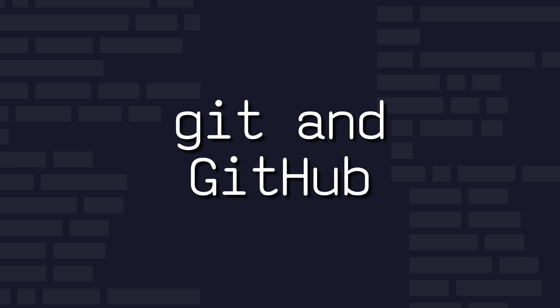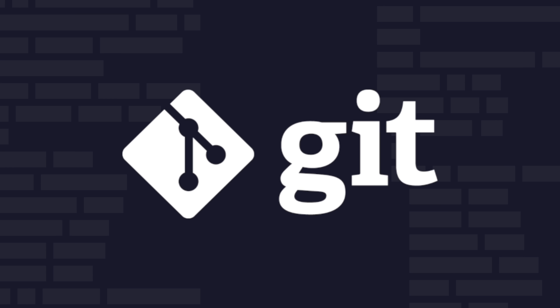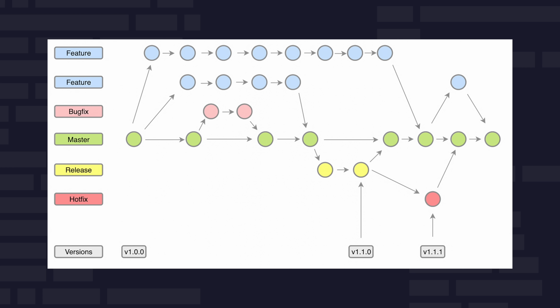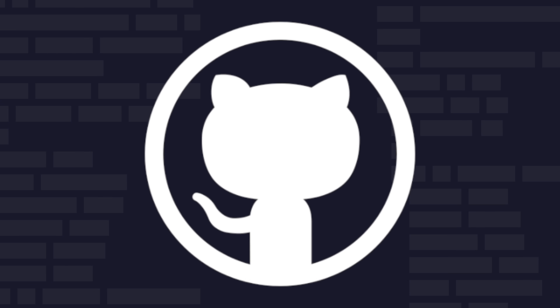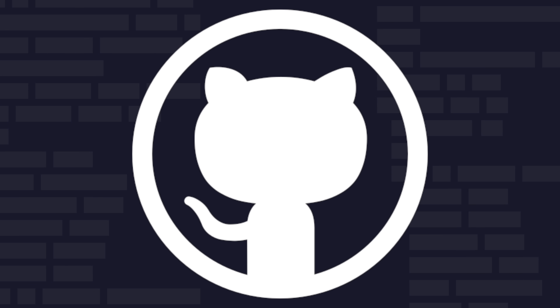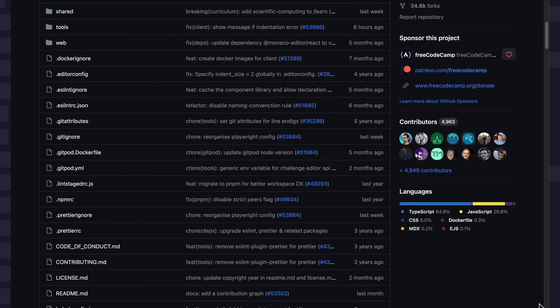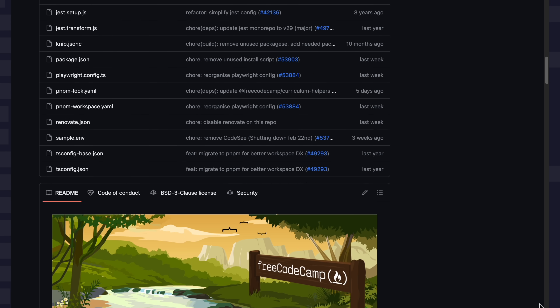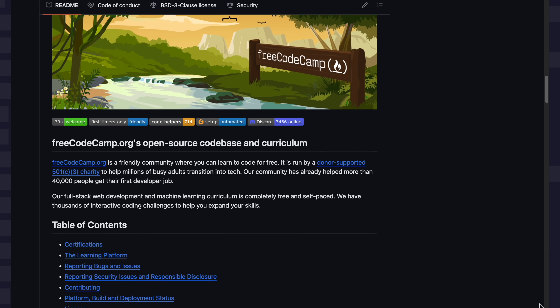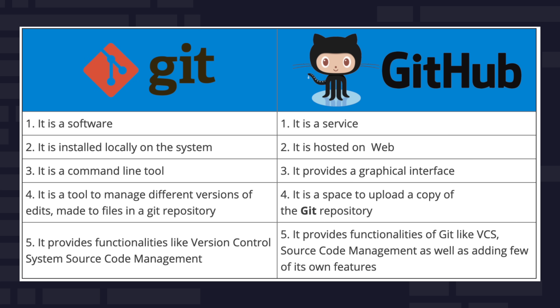Git is a version control system that allows developers to track and manage changes to their codebase. GitHub is a web-based platform that leverages Git and enables developers to collaborate on projects, review code, and manage changes. Understanding Git and GitHub is essential for back-end developers to maintain code integrity and collaborate effectively with others.